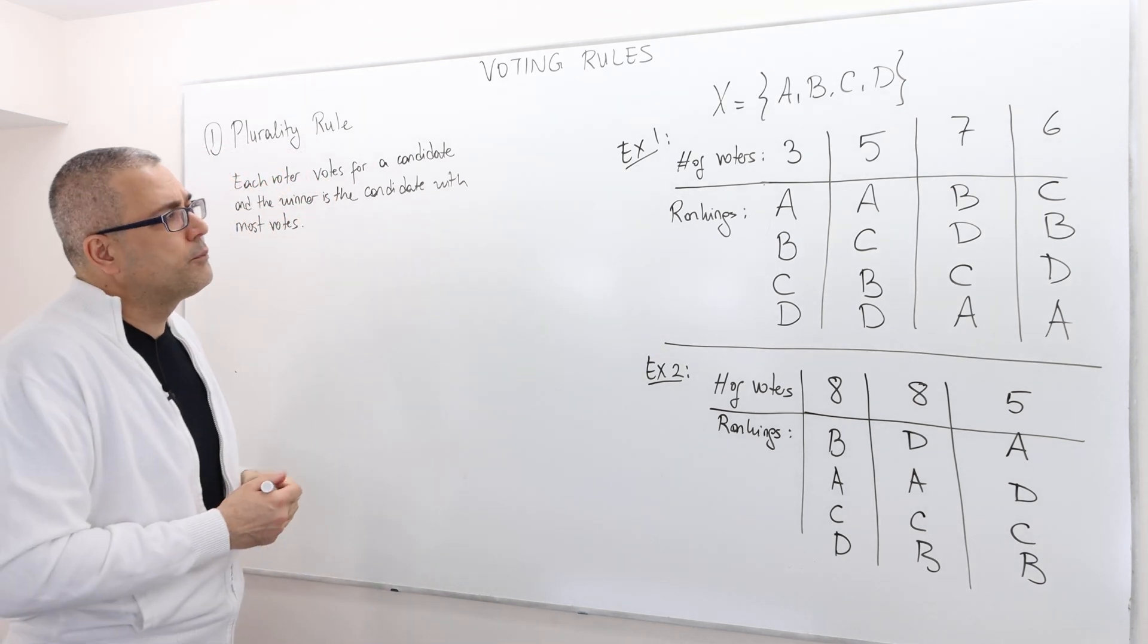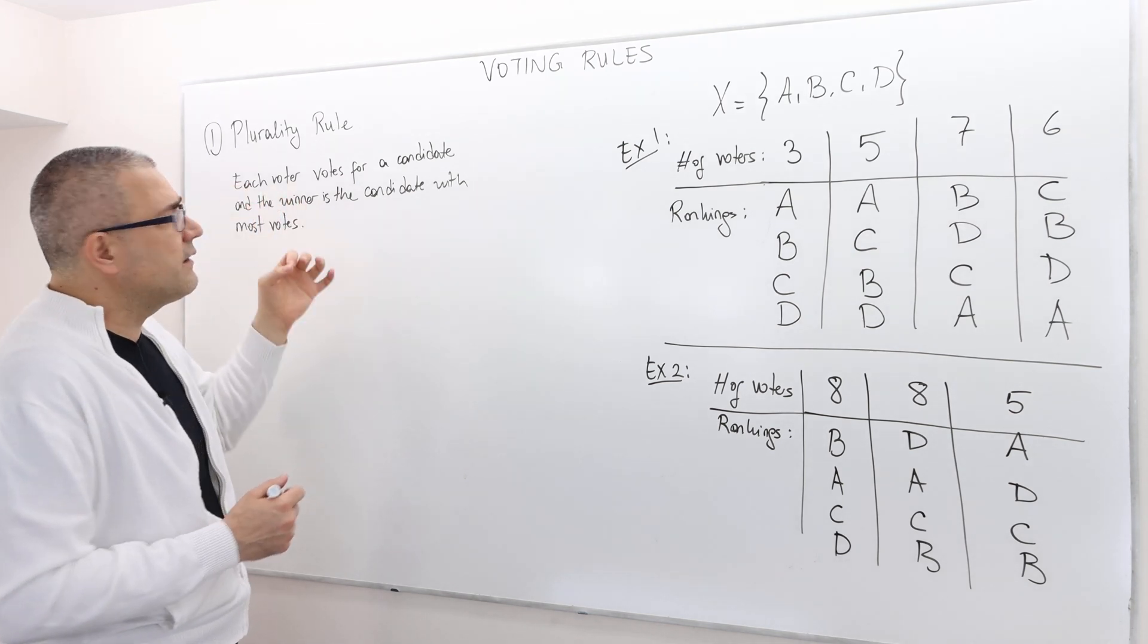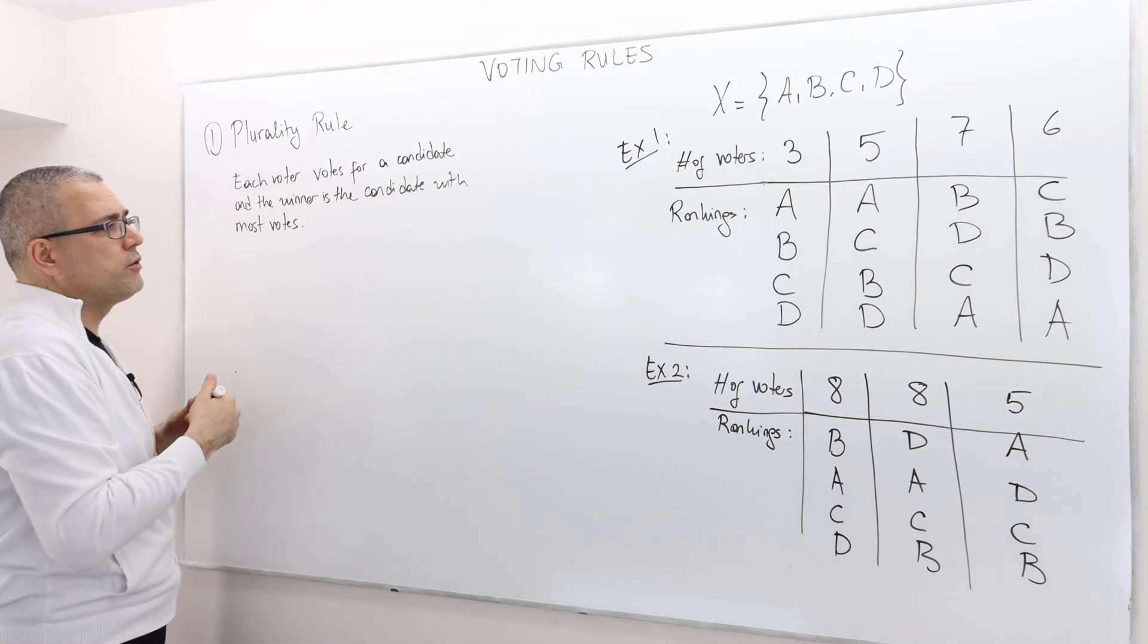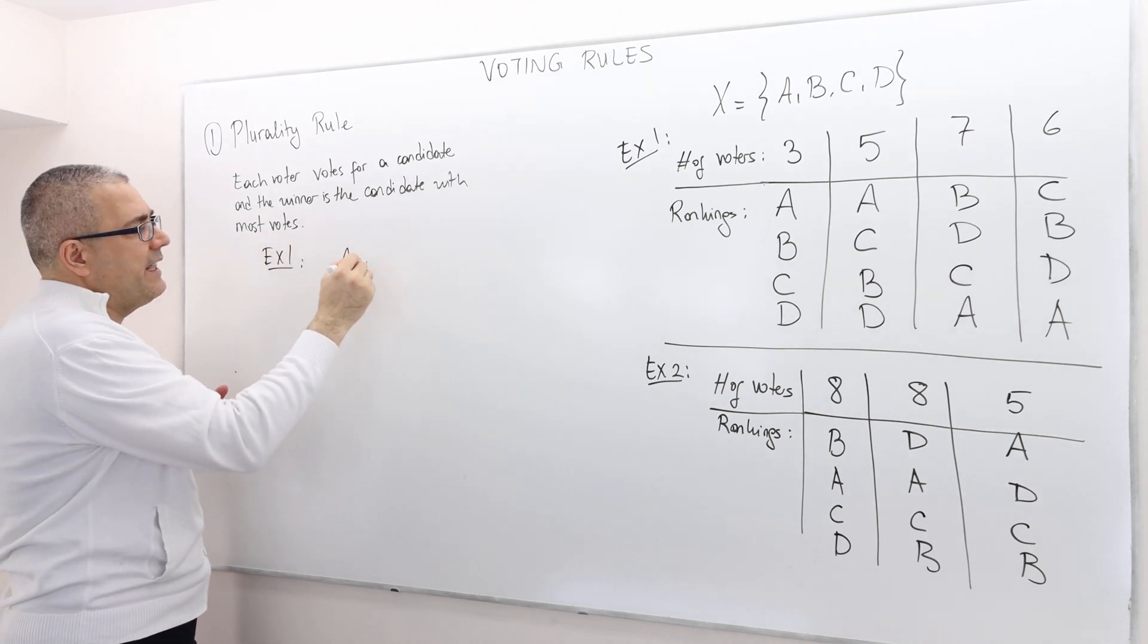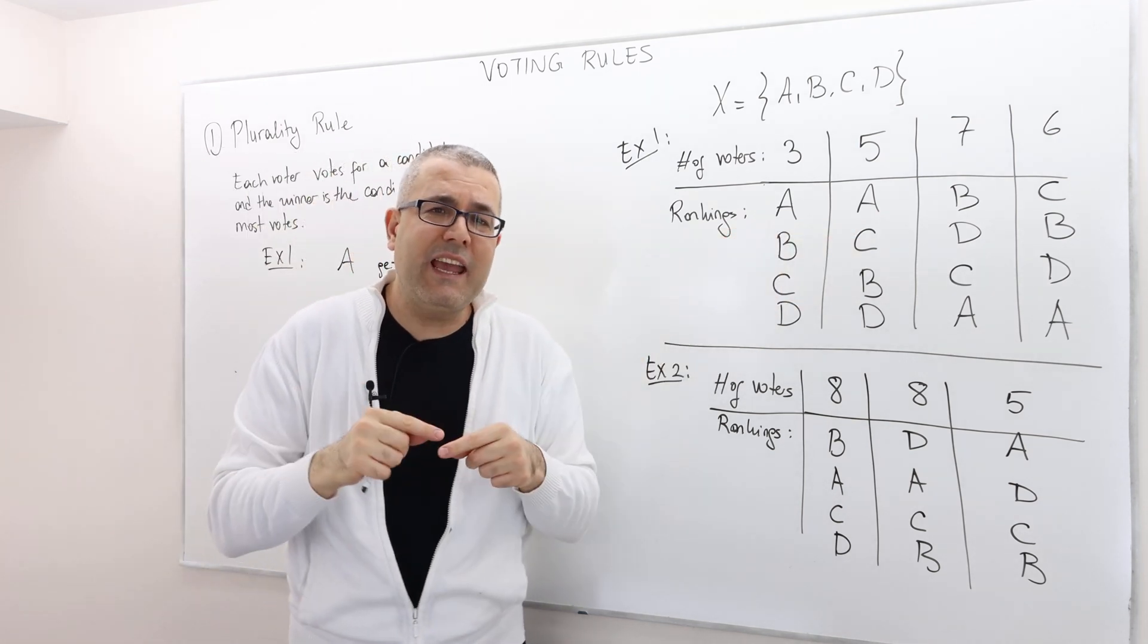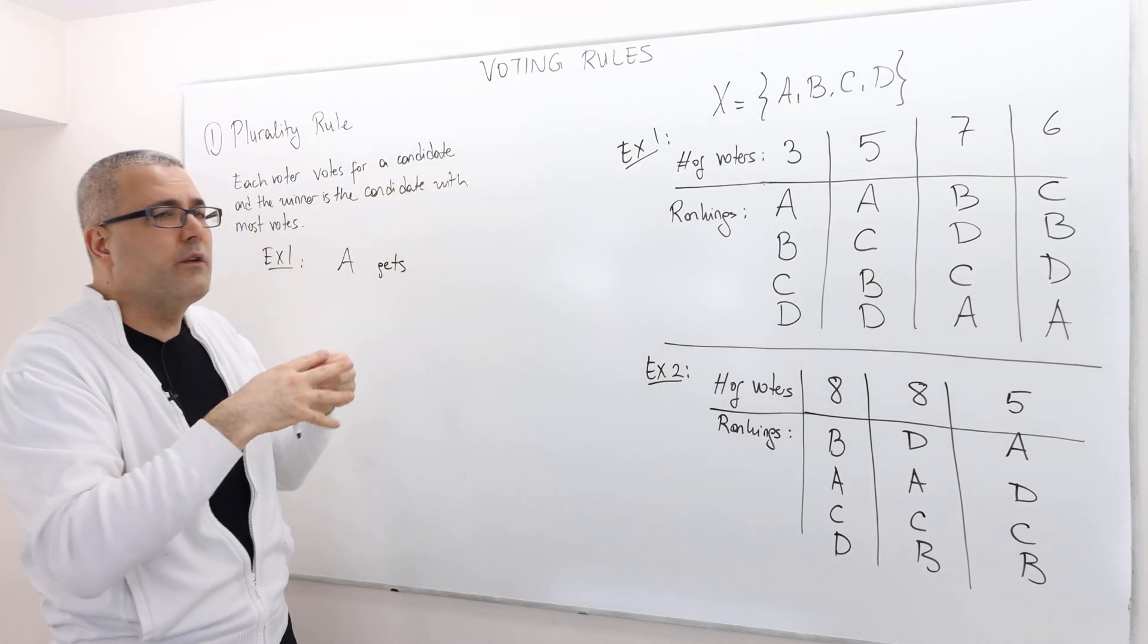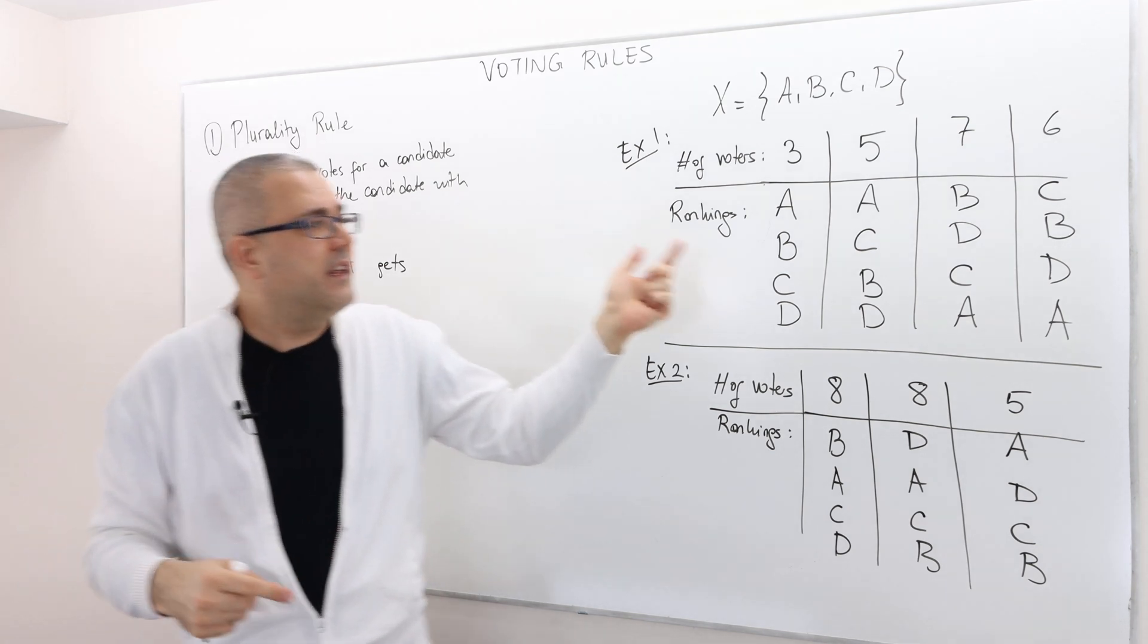So in the first example, the plurality rule is going to choose. Remember, plurality rule always chooses the candidate who gets the most vote. So here, in the plurality rule, example one, candidate A gets how many votes? Well, candidate A is ranked the first, remember, it is true that the candidates, I'm sorry, the voters are going to vote for one candidate.